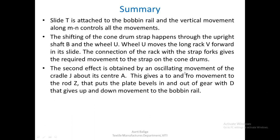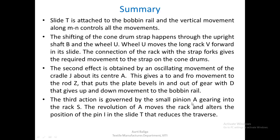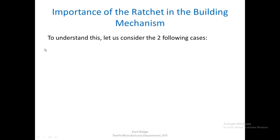The second effect is obtained by the oscillating movement of cradle J about its center A. This gives a to-and-fro movement to rod Z that puts the plate bevels in and out of gear, which gives up and down movement to the bobbin rail. The third action is governed by pinion R gearing into rack S. The revolution of R moves the rack and alters the position of pin I in slide T, which reduces the traverse.